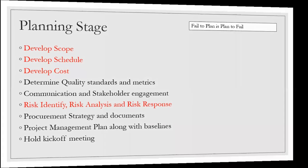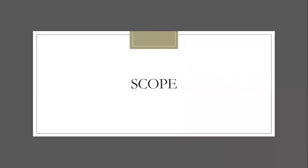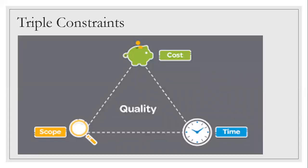Now let's talk about baselines. A conventional waterfall project management model has three key baselines, typically called the triple constraints: scope, cost, and time. These are the rigid baselines you have to define in the planning stage and get signed off. Your entire scope, entire cost, and entire schedule are defined there — think of them as the boundaries of the project.